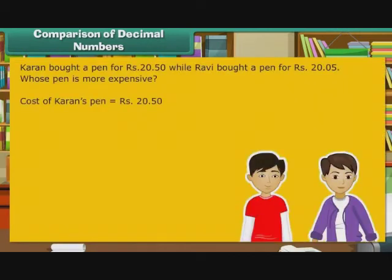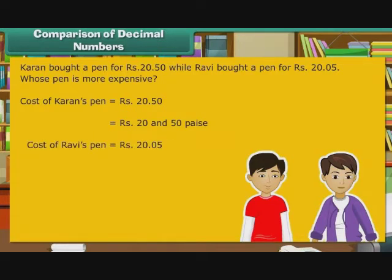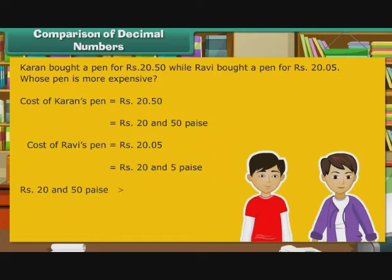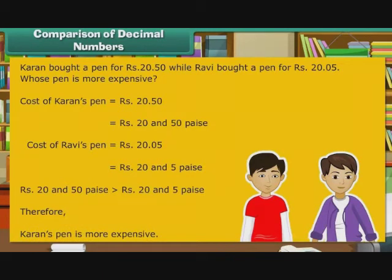The cost of Karan's pen is Rs. 20.50 and the cost of Ravi's pen is Rs. 20.05. Comparing the two, Rs. 20.50 is greater than Rs. 20.05. Therefore, Karan's pen is more expensive.